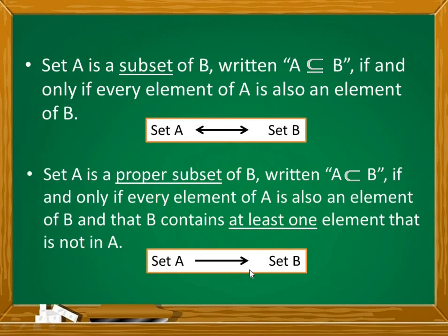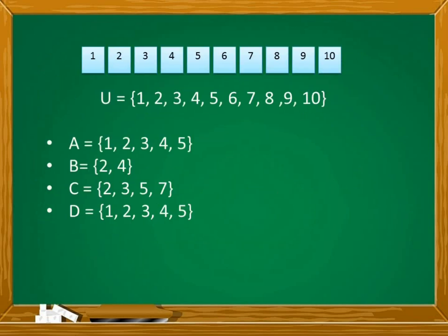The difference in the symbols: both use a sleeping U, but for subset there is an underline because they have equal elements. From these definitions and using our examples, we can say that sets A, B, C, and D are proper subsets of the universal set.